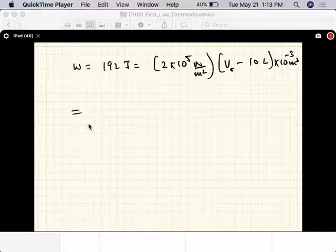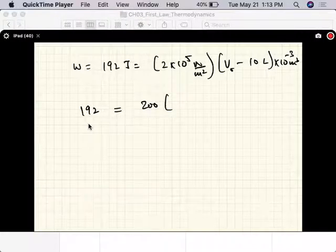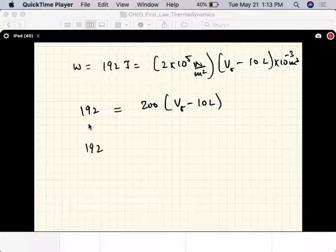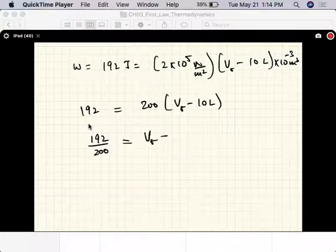Okay, so this gives us 192 joules equals 200 times V_final minus 10 liters. So V_final will come out in liters. We'll just divide that by 200: 192 divided by 200 equals V_final minus 10.